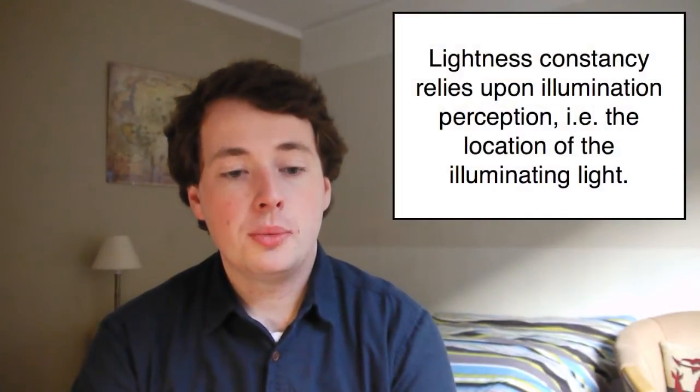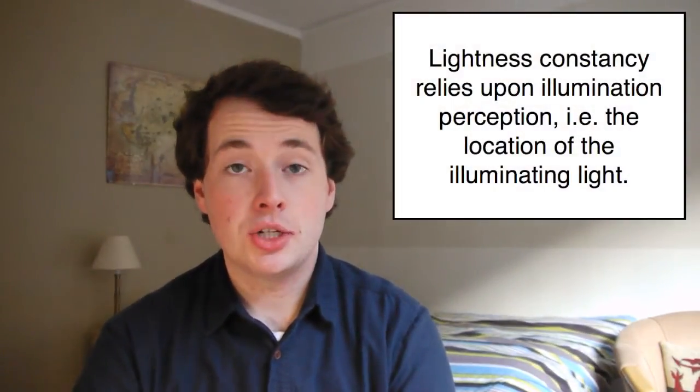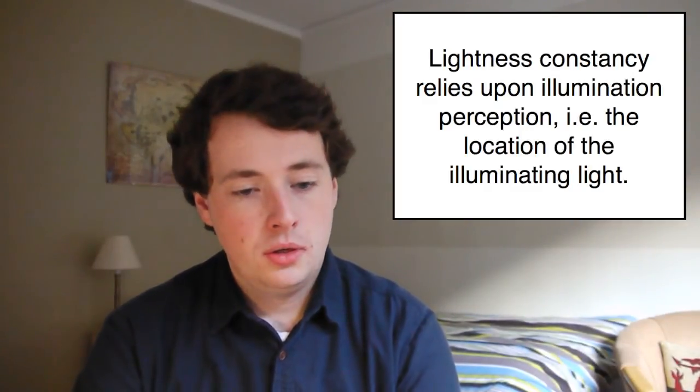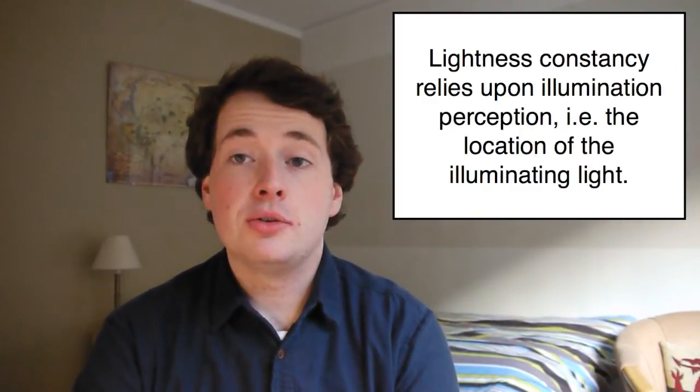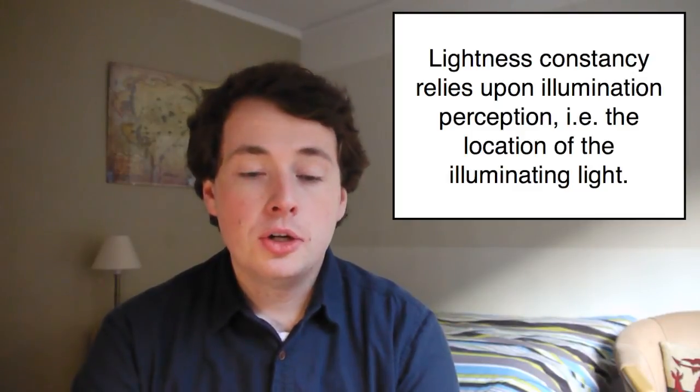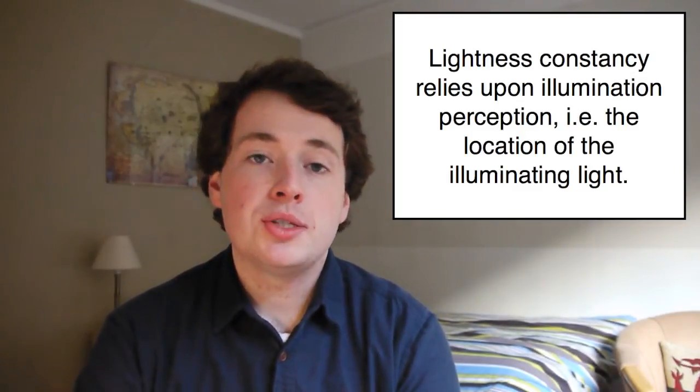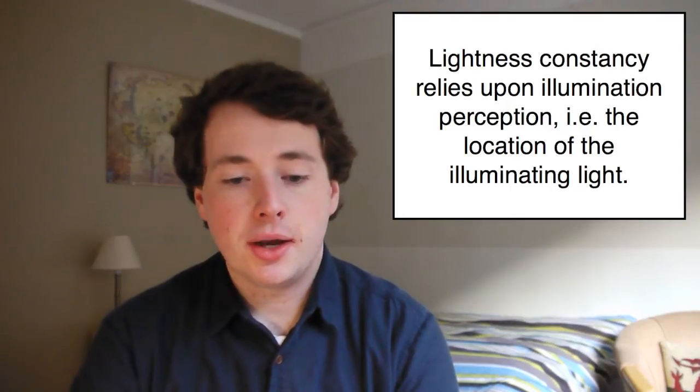Brightness is the product of both the object's illumination, which is how much light actually hits the object's surface, and also of lightness, which is how much of that light is then reflected out to the observer's retina. The illumination of an object is determined by the brain's interpretation of where it perceives the location of the illuminating light.